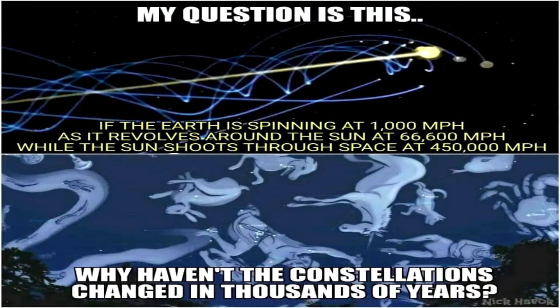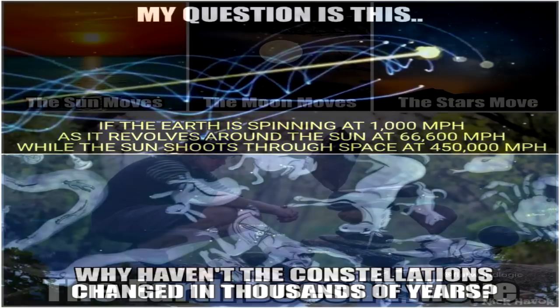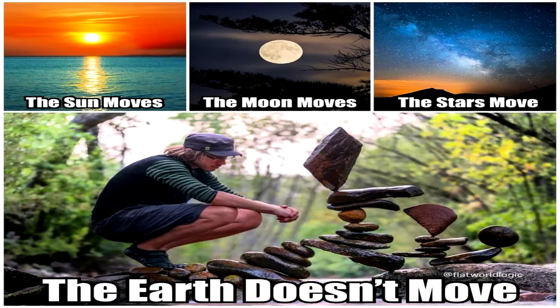Observers on a ball Earth, regardless of any supposed tilt or inclination, should not logically be able to see this far. And once again, rather than the declination of the Polestar proving the globe, it provides yet more evidence that Earth is a stationary plane.